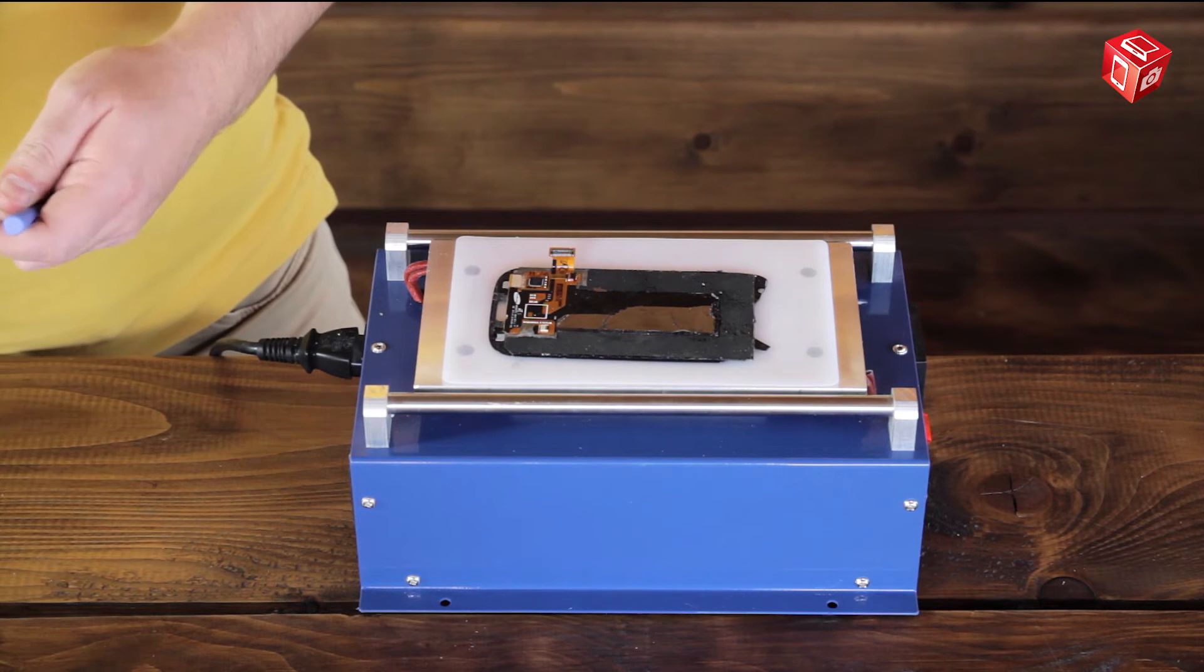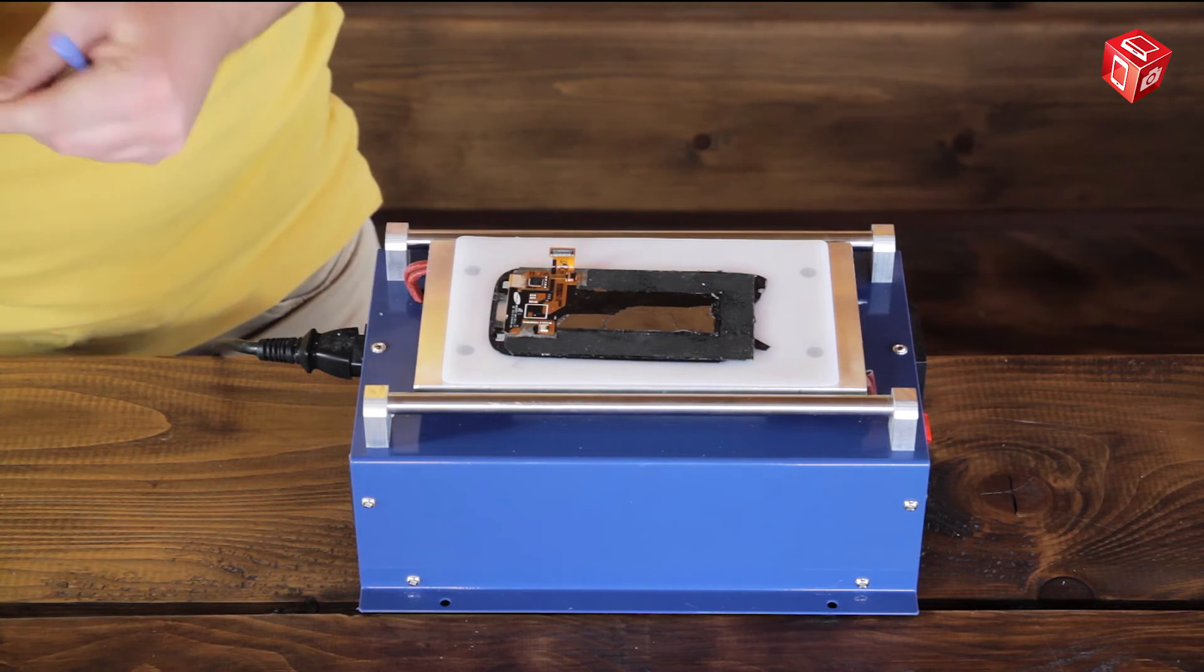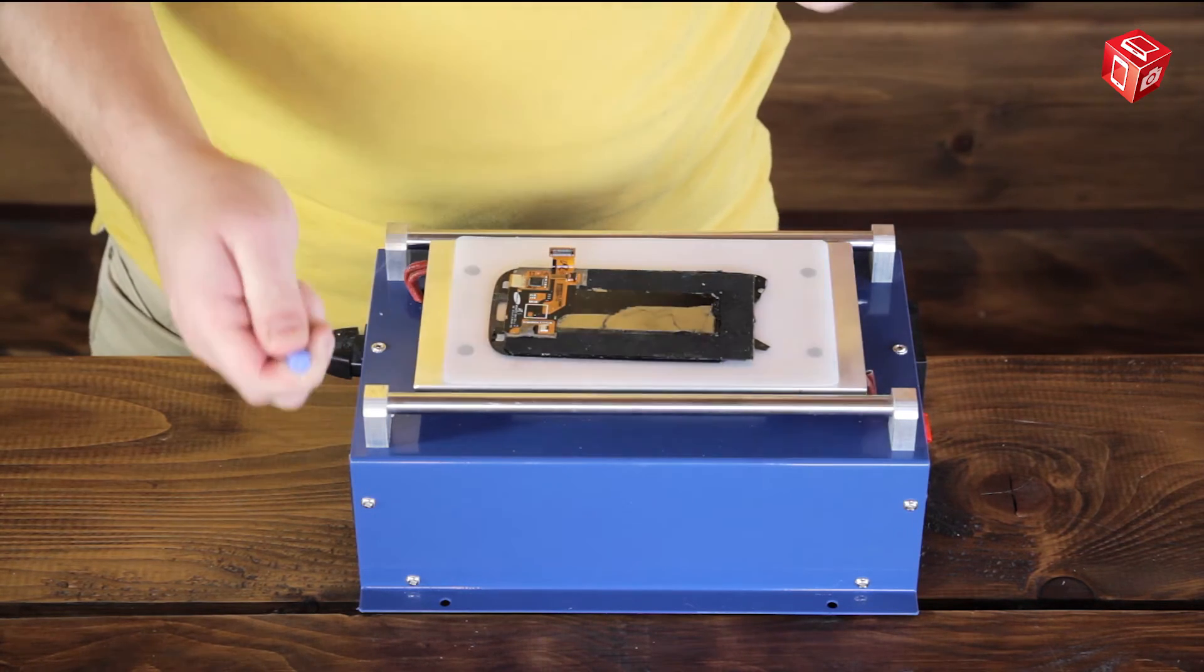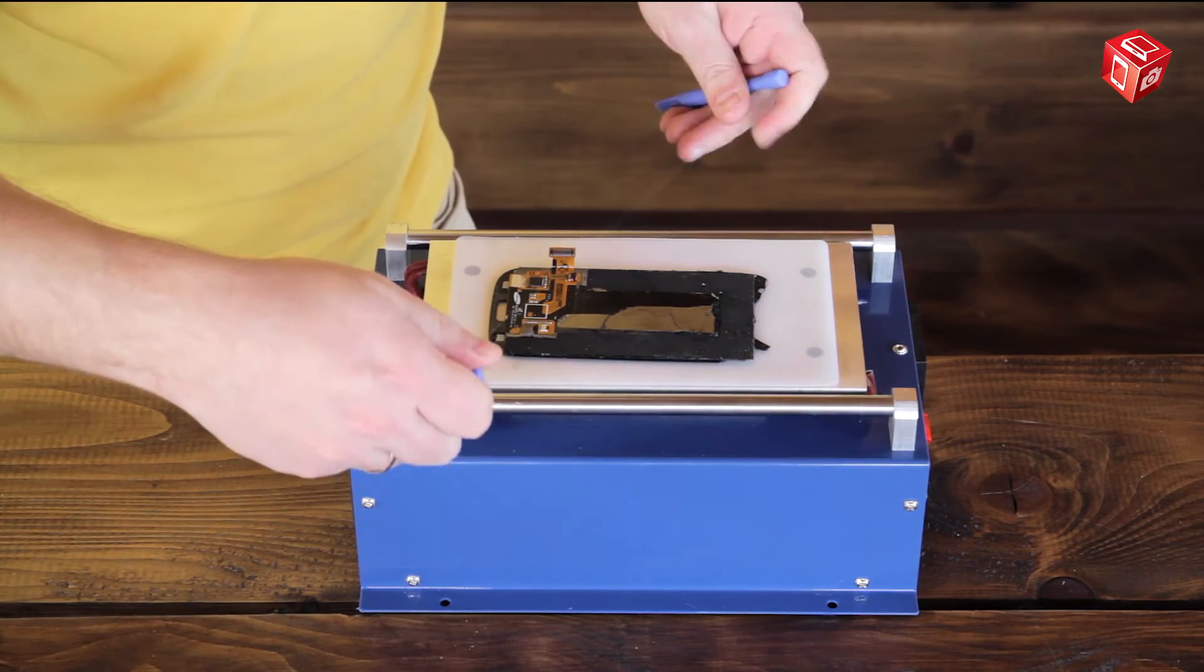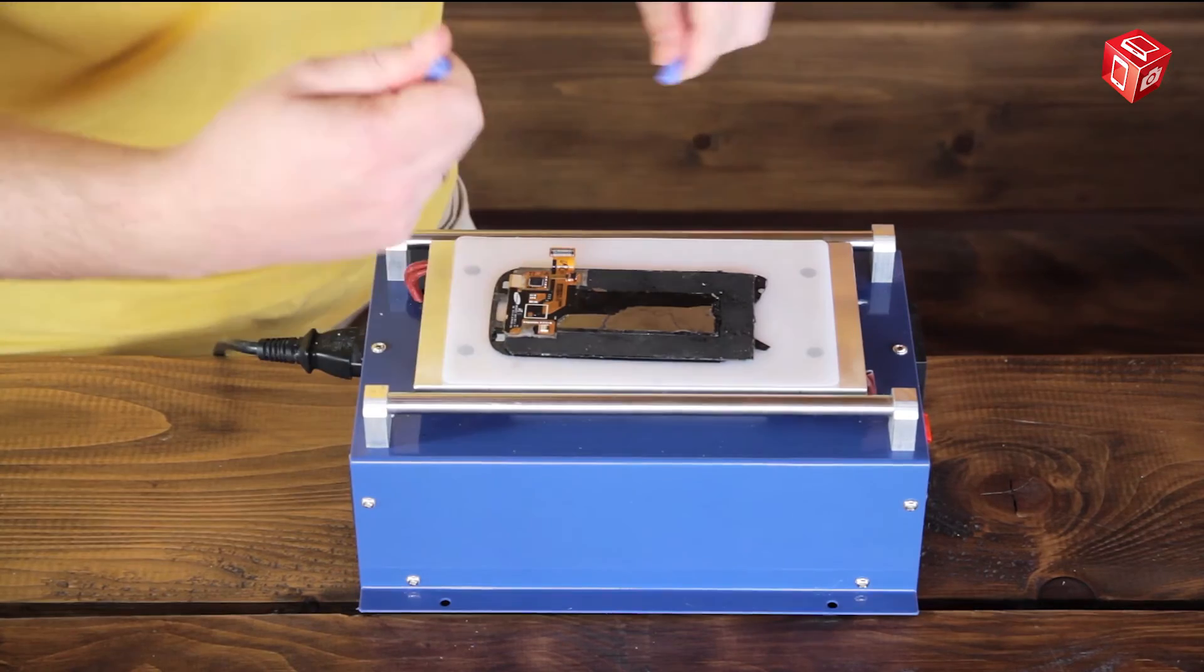Now let's demonstrate how to remove glass using a TBK988 separator. Switch on the vacuum pump and put the display module on the silicone pad. Wind a string on two holders. The display module is already warm enough to start removing the glass.